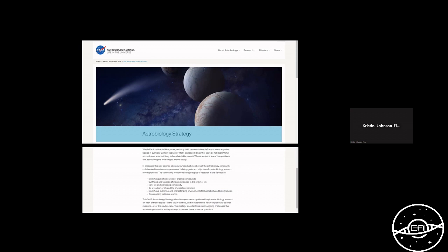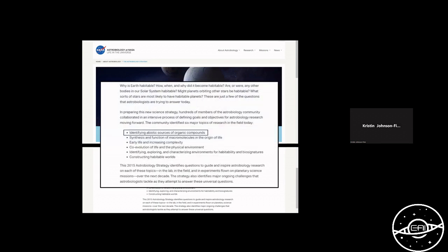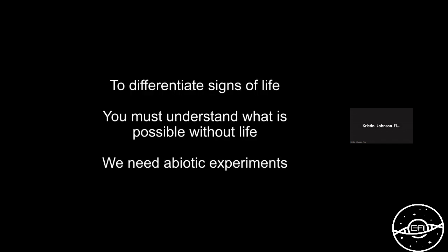Abiotic chemistry is also currently at the core in terms of NASA initiatives. This is the astrobiology strategy, as you can find on the NASA website. After summarizing the concerns and interests of the general scientific community in astrobiology, you see at the top of the list is identifying abiotic sources of organic compounds. So what I propose to you today is that to differentiate the signs of life, you must first understand what is possible without life.